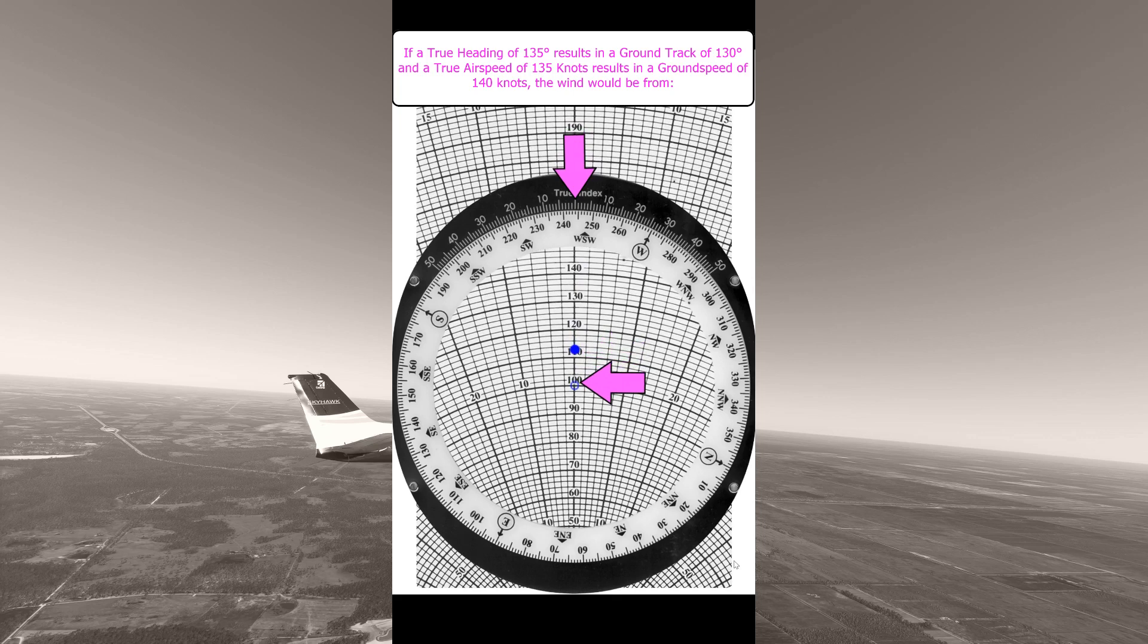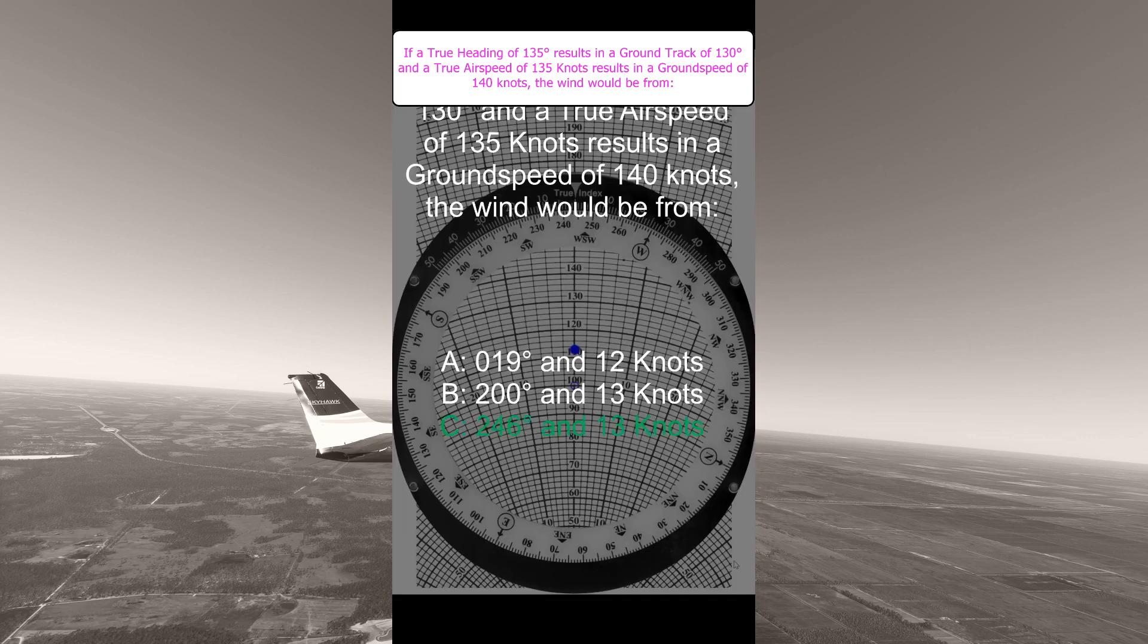So in this case it's around 13 knots and the true index is pointing to 244. And given that one of the options is 246 at 13 knots I think we can forgive ourselves for 2 degrees.